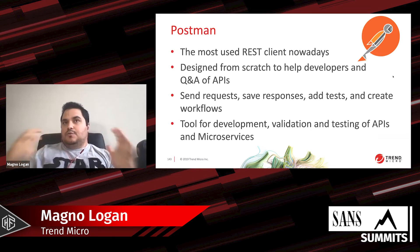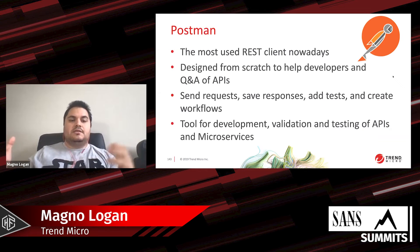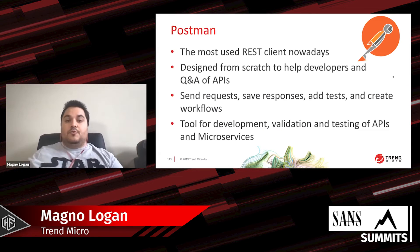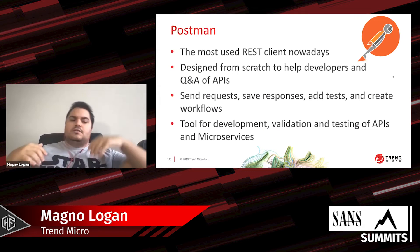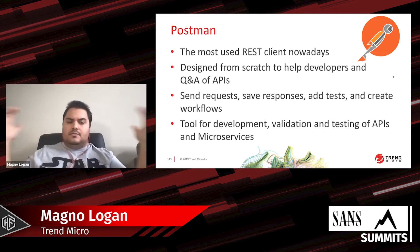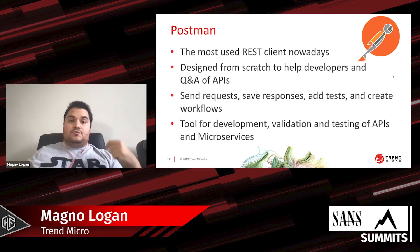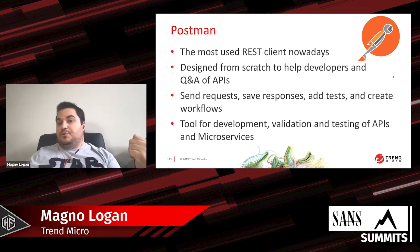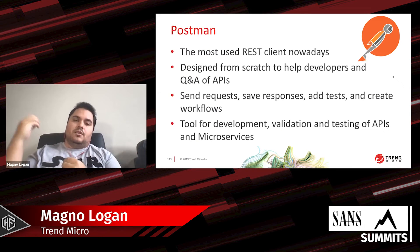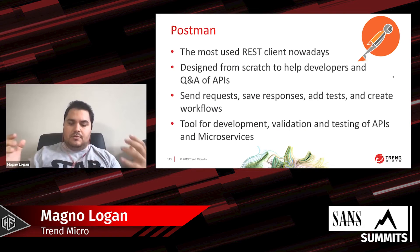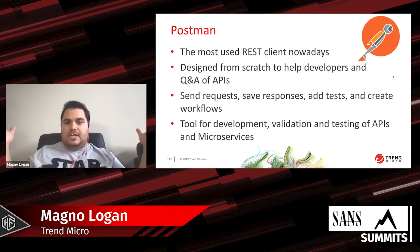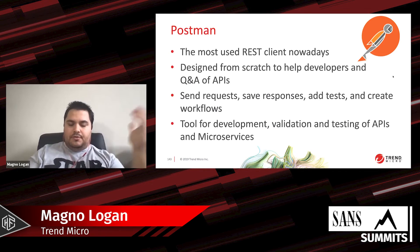The second important tool is Postman. Postman is a great tool for testing REST APIs — it was developed for developers and QA. It can send requests, save responses, add testing, and supports a lot of automation. You can change methods easily, save your previous requests, and do a lot of validation and testing of APIs and microservices. It works on any platform — just download it and start using it. That's the one I used in the Juice Shop demo.